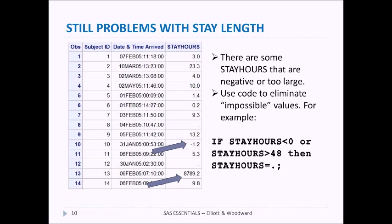Most of these errors are due to typos in the original data set when entering dates and times. Since we don't know how to fix those typos, we're going to use an IF statement to say: if stay_hours is less than zero or greater than 45, then we'll set stay_hours to a missing value.